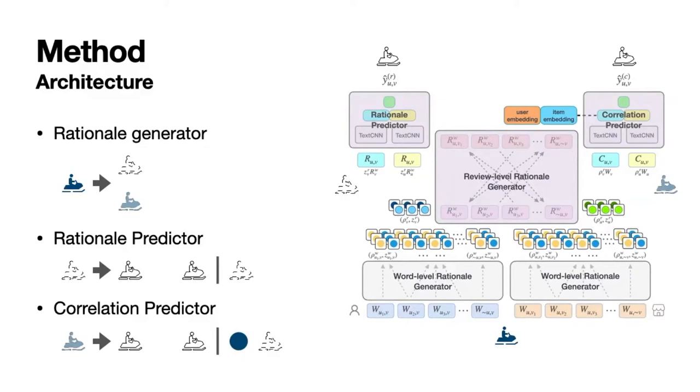In the shape prediction example, the Rationale Predictor should only take the outline of an object extracted by the Rationale Generator to predict the shape. The Correlation Predictor instead takes all features as input including both rationales and correlated features. It takes both the outline and the color for prediction. The prediction process is similar to the Rationale Predictor.